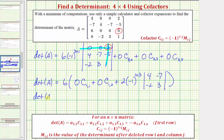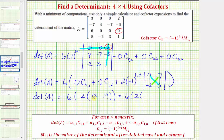Simplifying, we have six times: the zero terms drop out, negative one to the fourth is positive one, so two times positive one is two. The two by two determinant gives four times three minus negative seven times negative two, which is twelve minus fourteen, equal to negative two. So we have six times two times negative two, which is six times negative four, which equals negative twenty-four. The value of the four by four determinant is negative twenty-four.